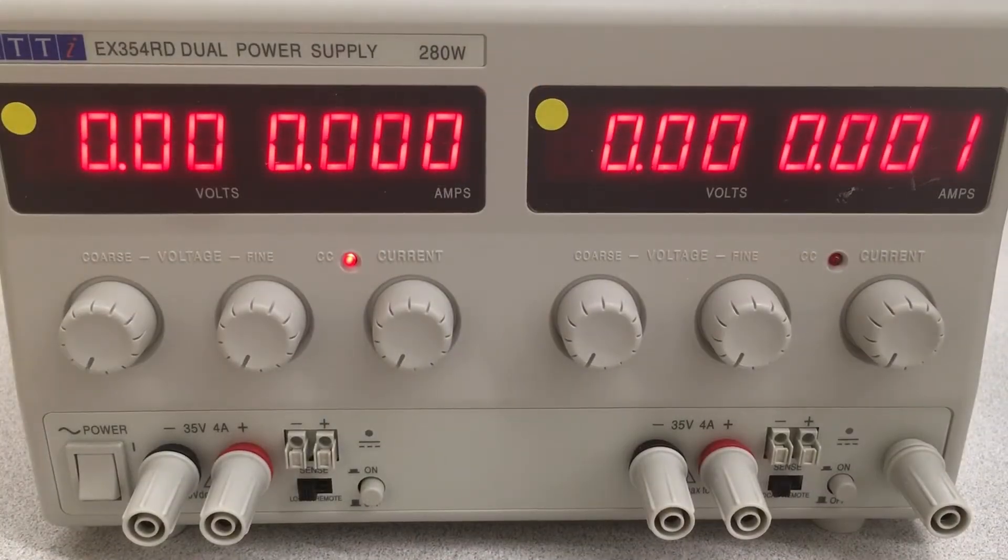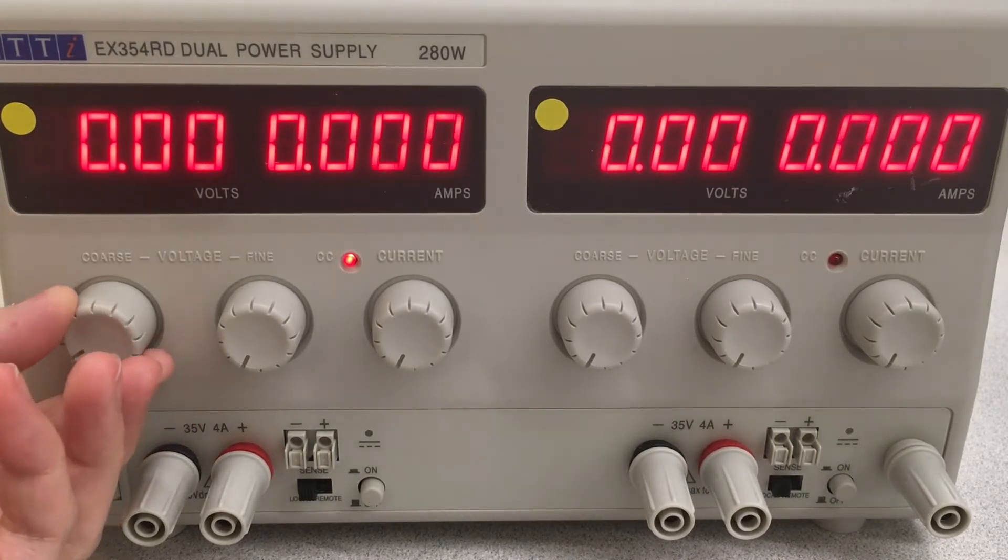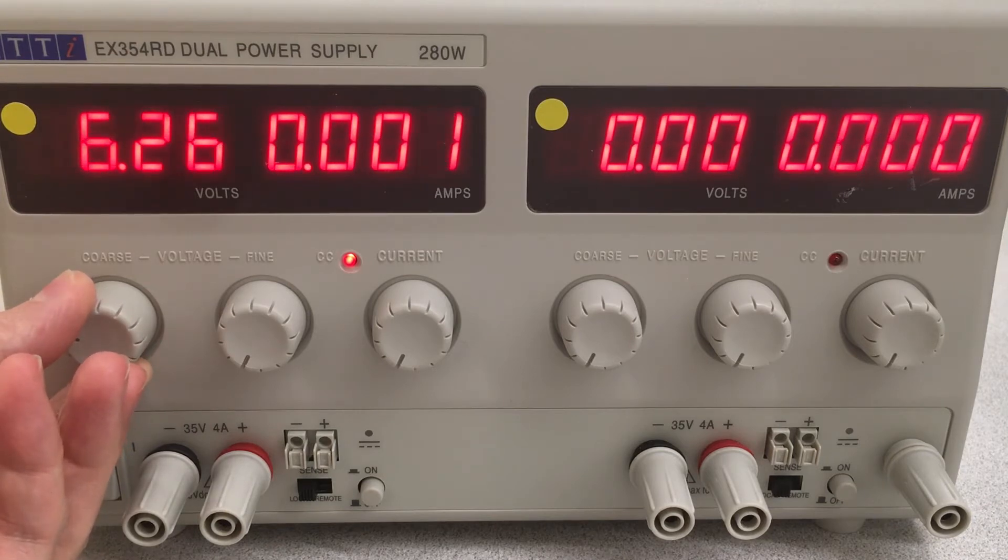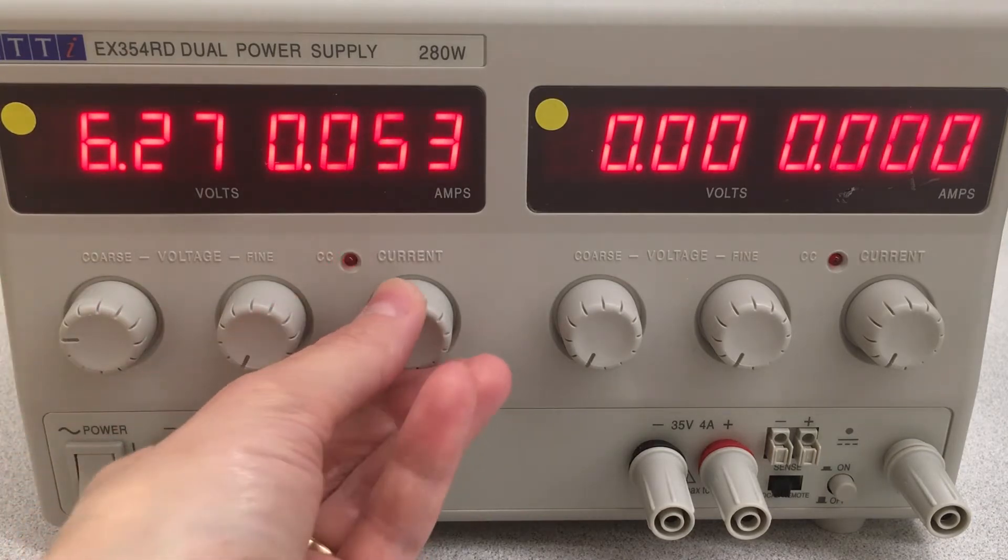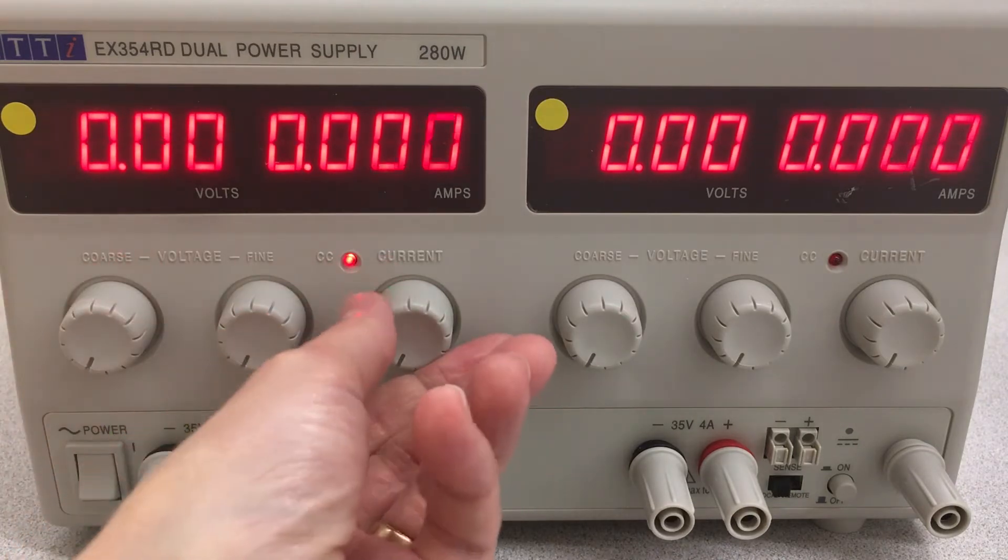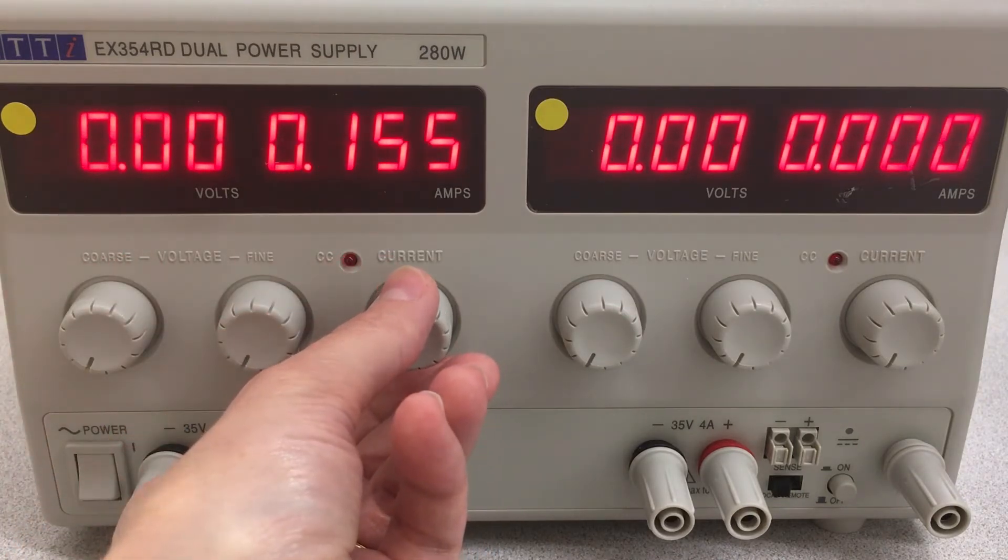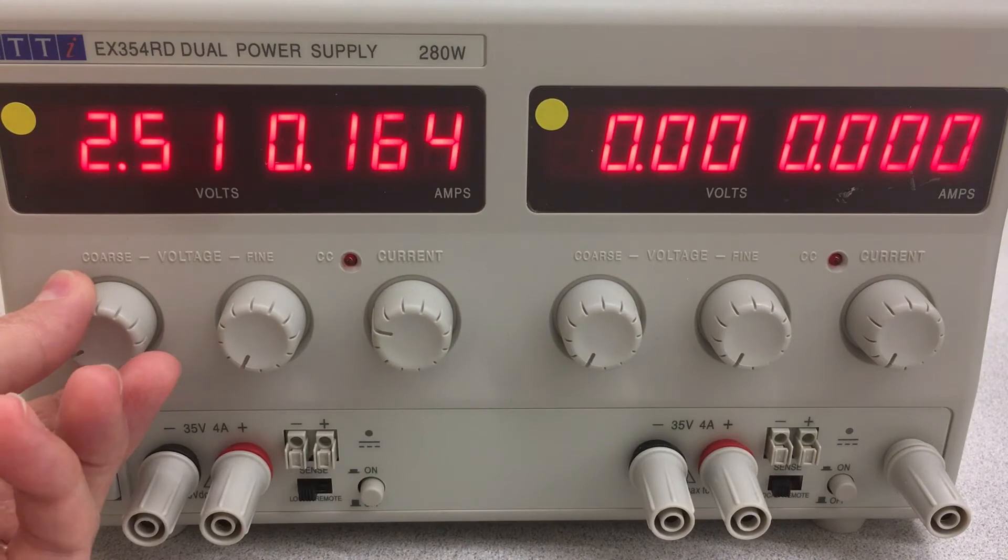The power supply can be set to current limiting or voltage limiting modes. For voltage limiting, set the voltage to the maximum allowable by the circuit, then you can vary the current. To set to current limiting, set the maximum allowable current for the circuit, then vary the voltage.